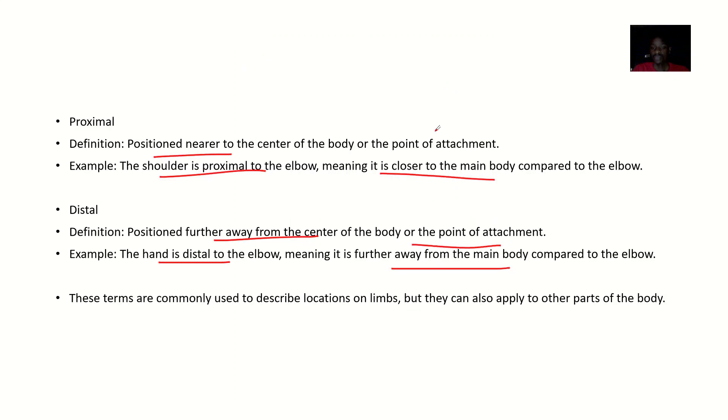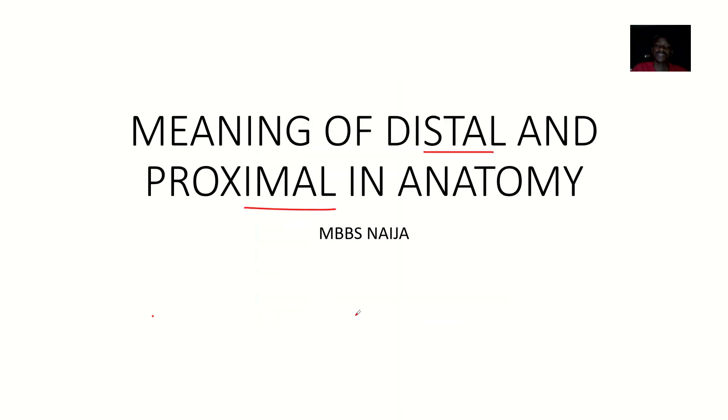You get it. So for the terms that we're talking about, distal or proximal, they are terms that you use commonly to describe positions on limbs, but they can also apply to other parts of the body too. So that's it for distal and proximal in anatomy.